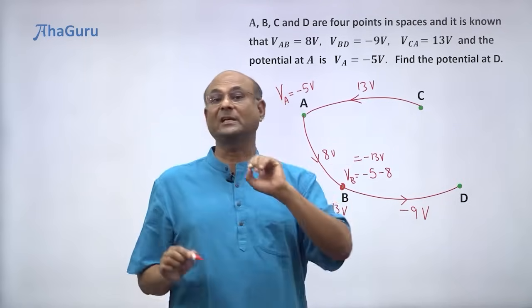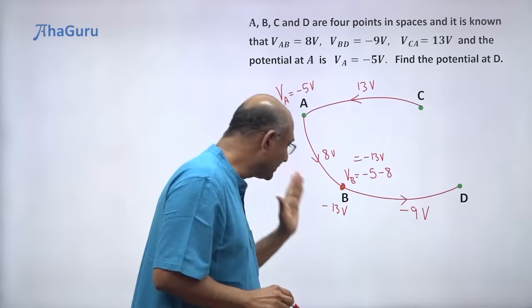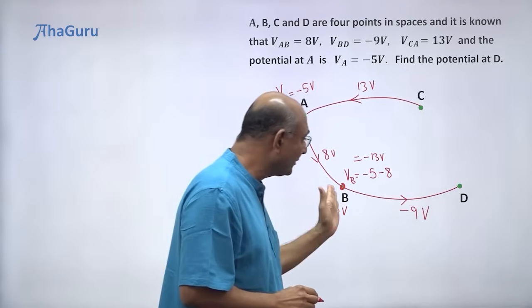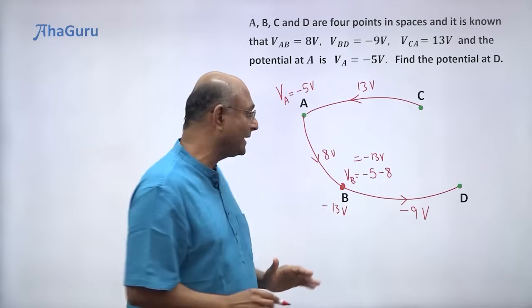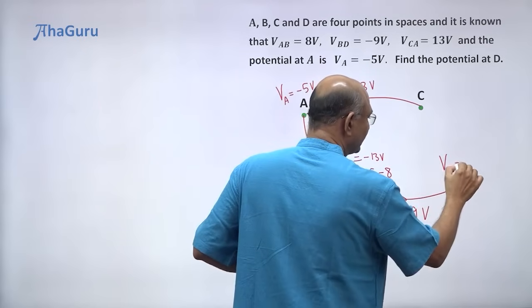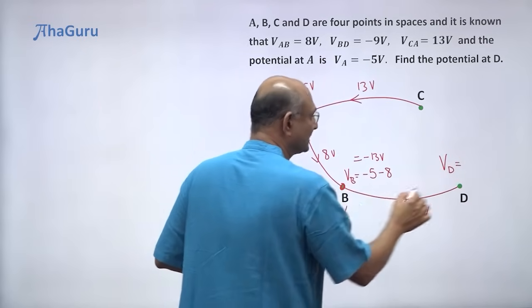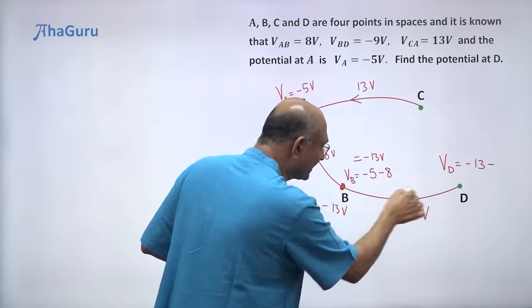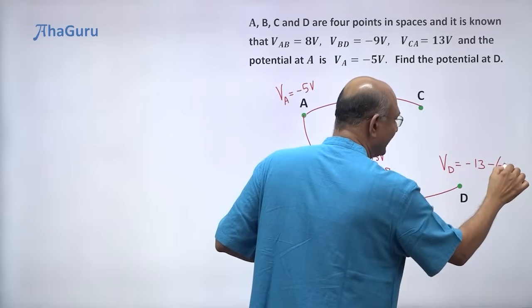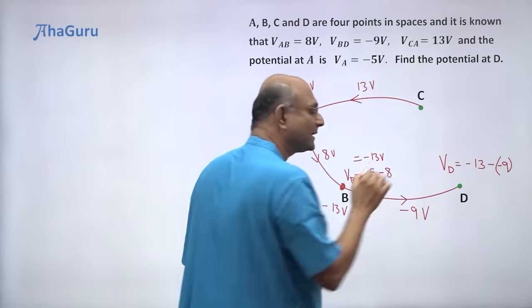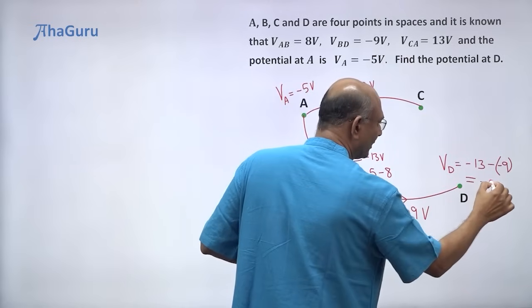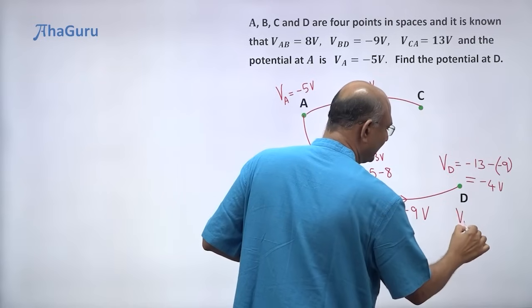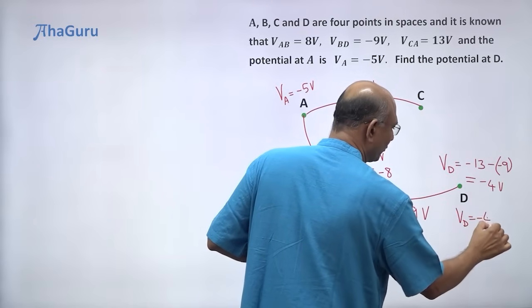But the question is actually potential at D. How will I find that? Well, I know this potential is minus 13 and you are dropping by minus 9. So potential at D is this potential, the starting potential, minus 13 minus the potential drop, minus of minus 9. So minus 13 plus 9 is minus 4. So the potential at D, V_D is minus 4 volts.